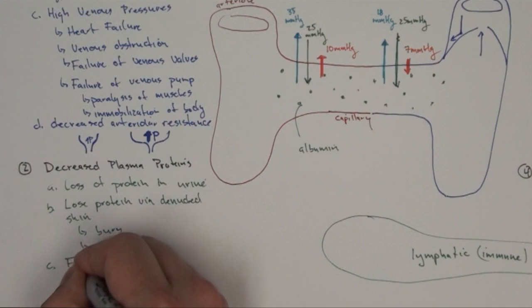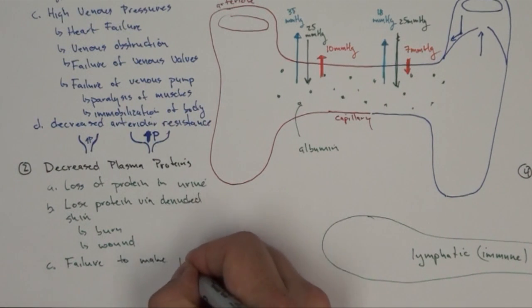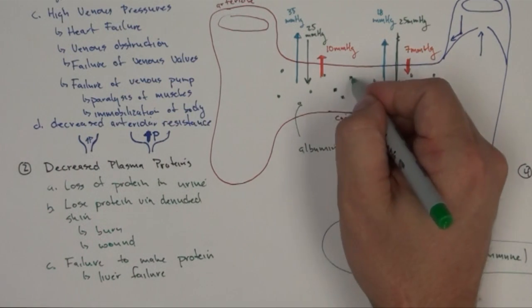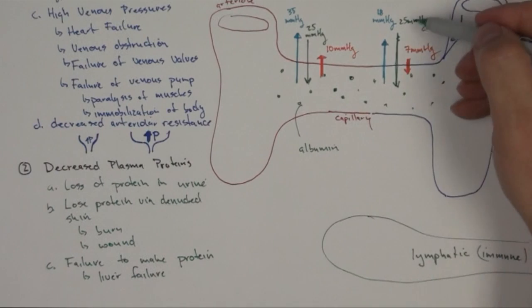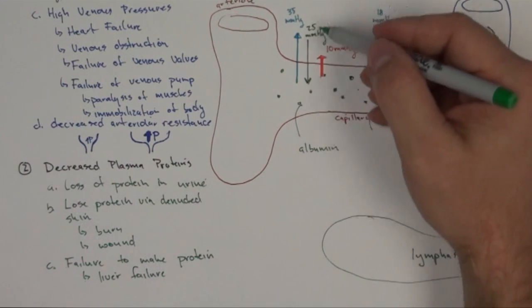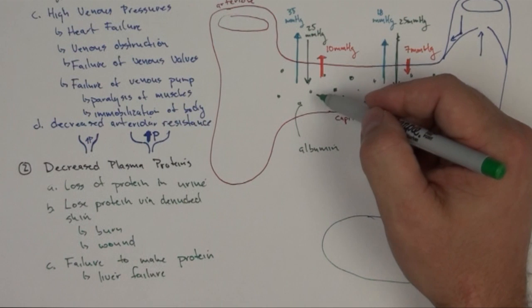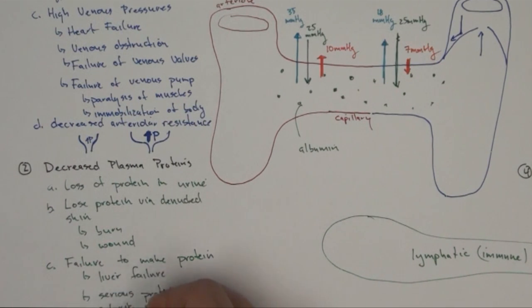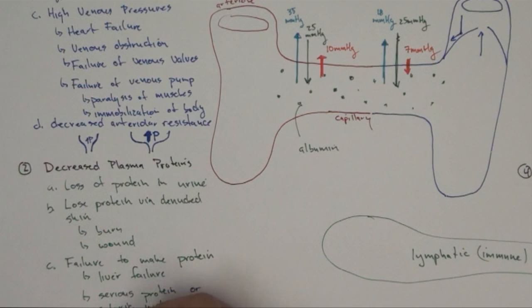Third, there can be failure to make proteins. This can result from liver failure, because the liver makes albumin — if it's failing, it doesn't make albumin, which reduces oncotic pressure (OPC) and diminishes the force drawing fluid back in. Serious protein or caloric malnutrition, or something like a B12 deficiency, can also decrease protein production, since you need B12 to make methionine and you need methionine to make proteins.